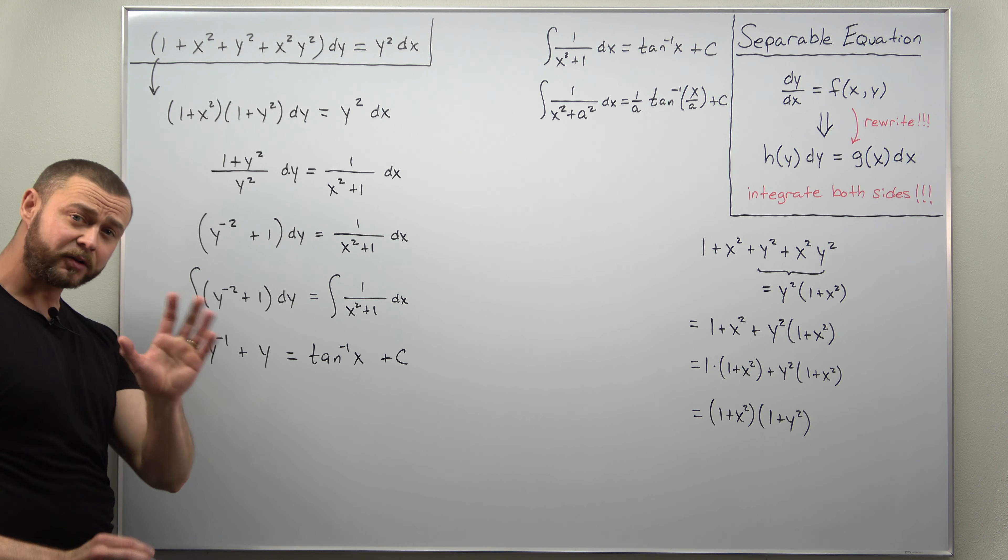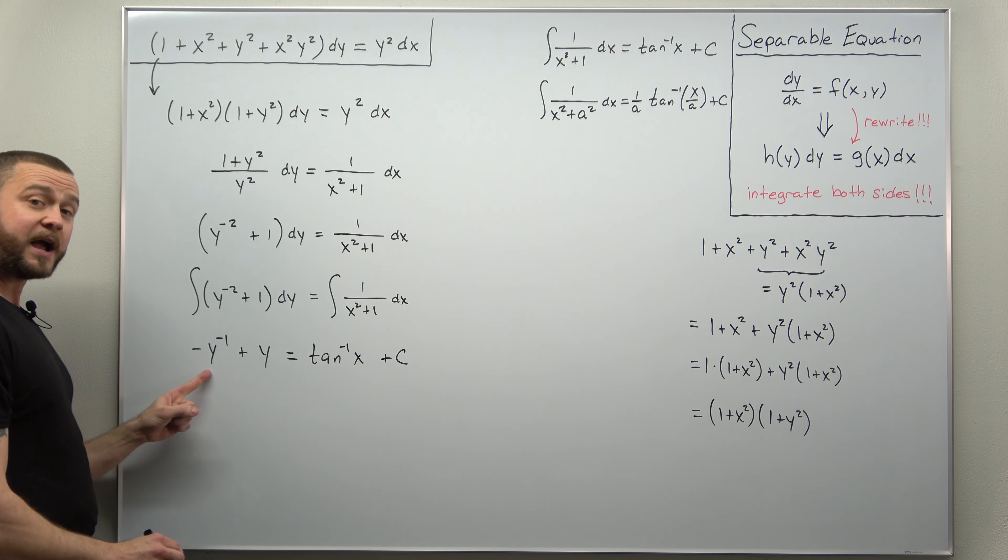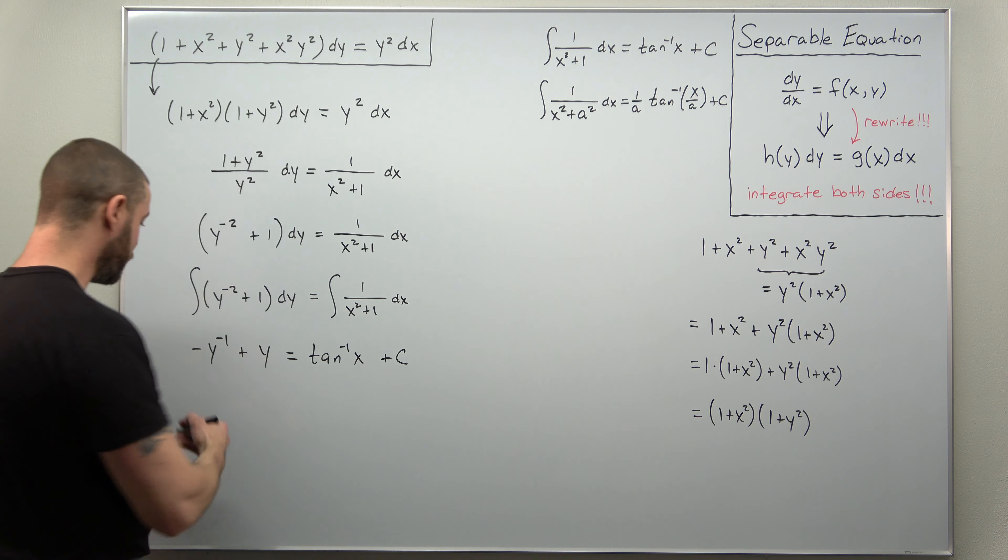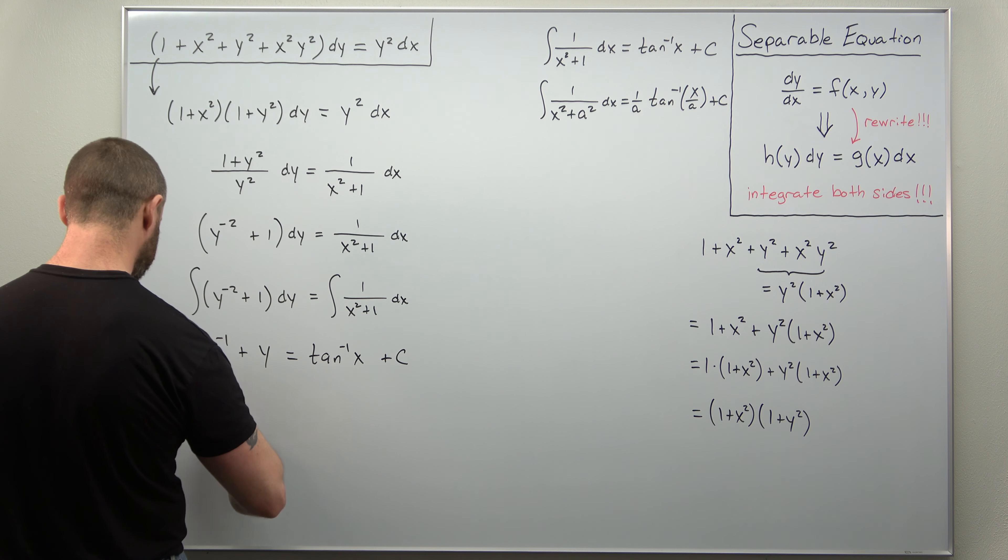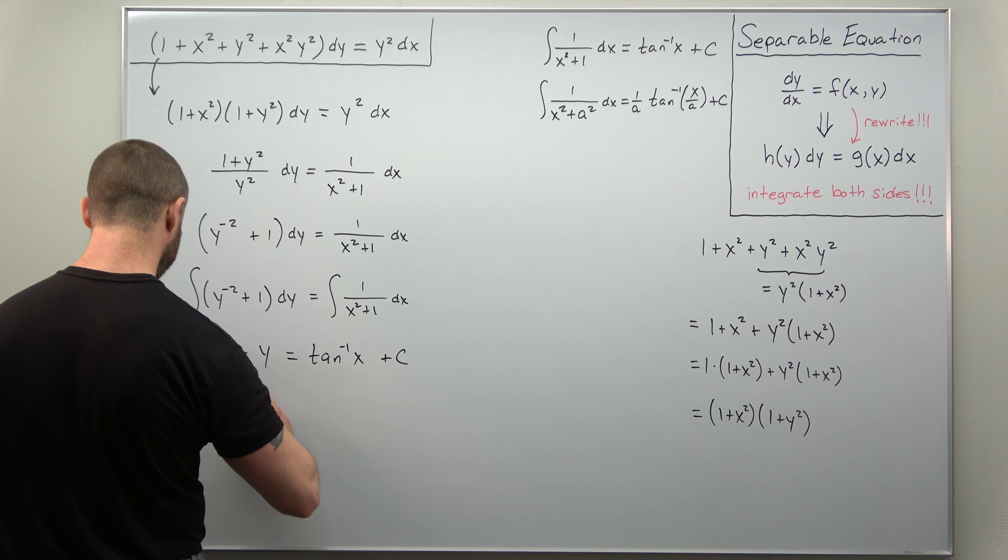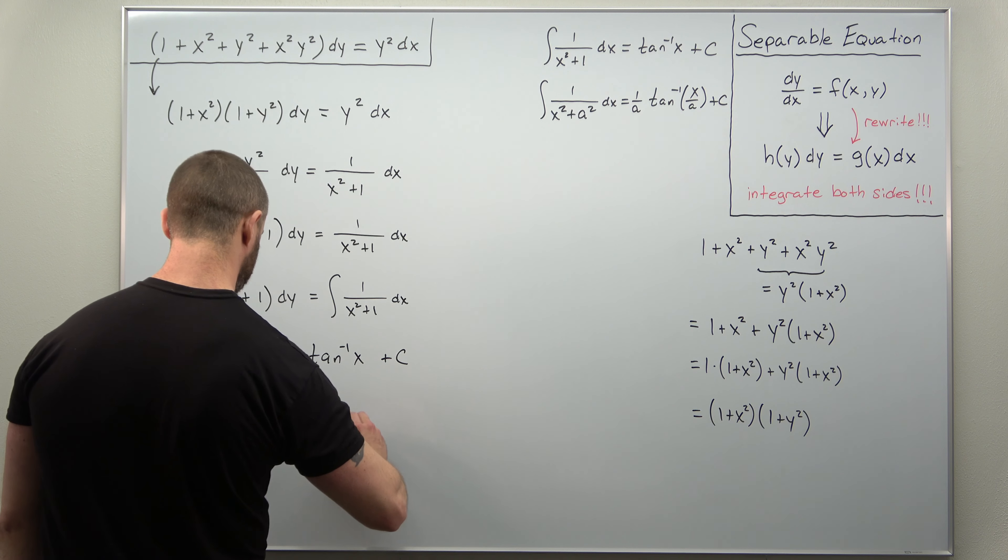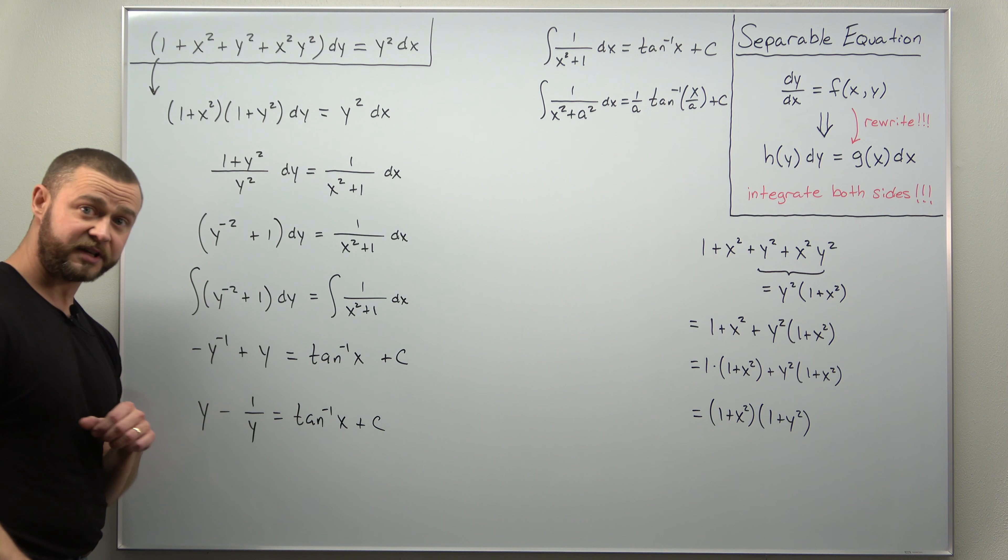And you can clean this up, make it look a little bit nicer. Y to the negative 1, you can rewrite that as 1 over y, and then I'll switch the order to write the left side as y minus 1 over y equals inverse tangent of x plus c.